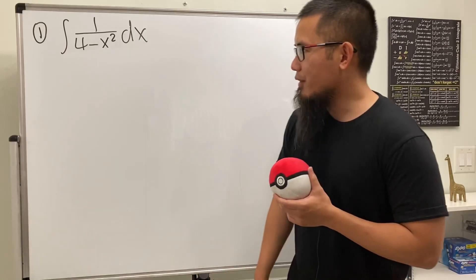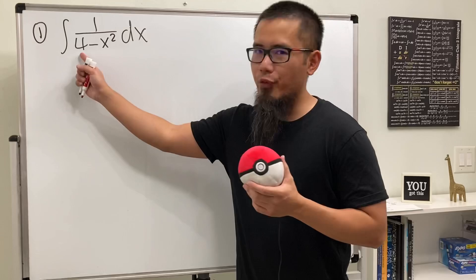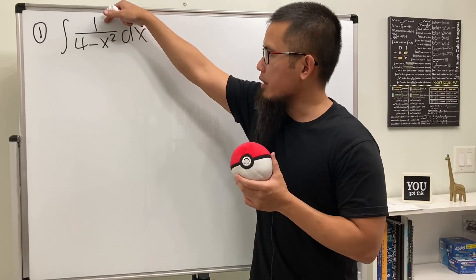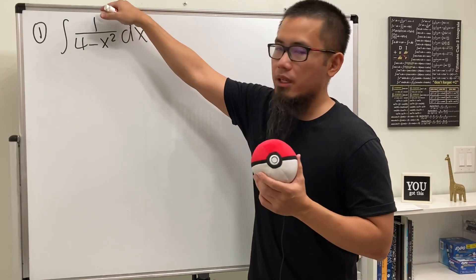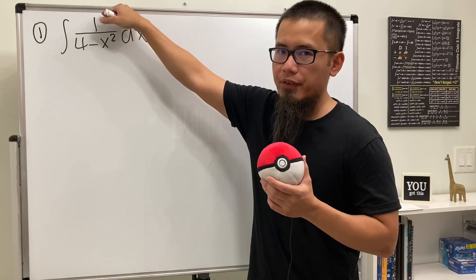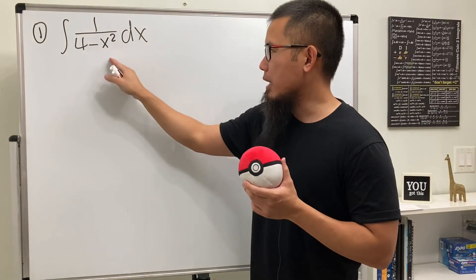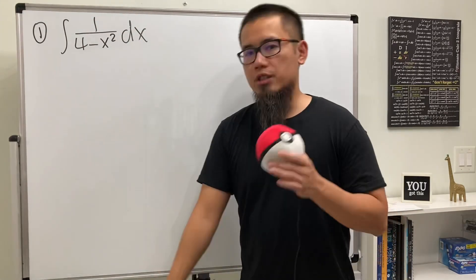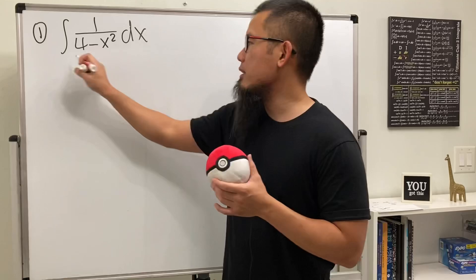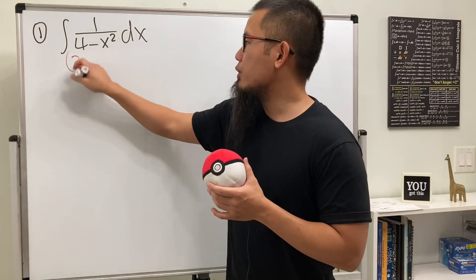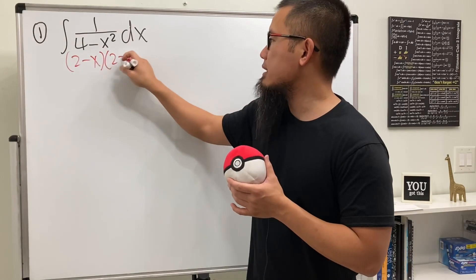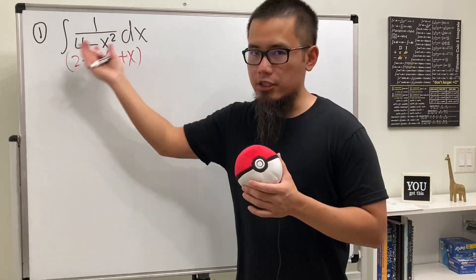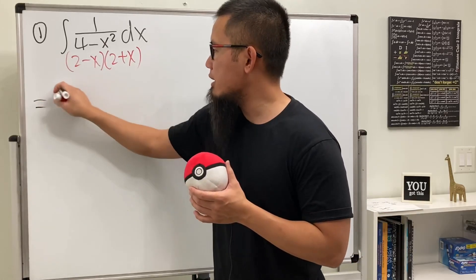For the first one here, we have the integral of 1 over 4 minus x squared. As we can see, we only have a 1 on the top, so the degree is definitely smaller than the degree on the bottom. The degree on the bottom is 2. So you can just go ahead and factor the bottom, and we get (2 minus x) times (2 plus x).